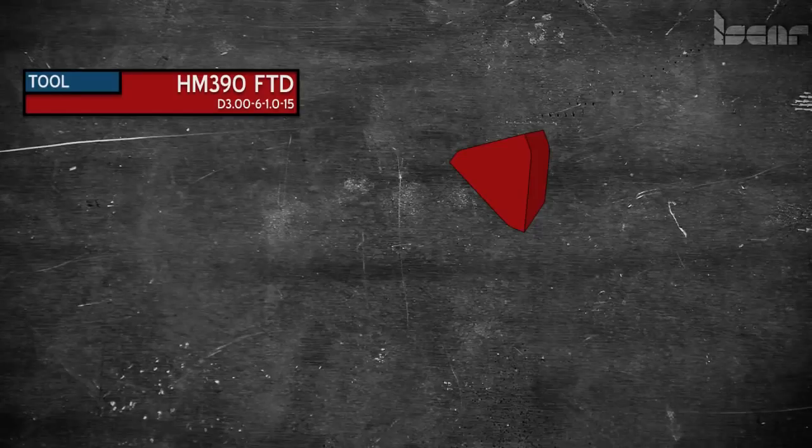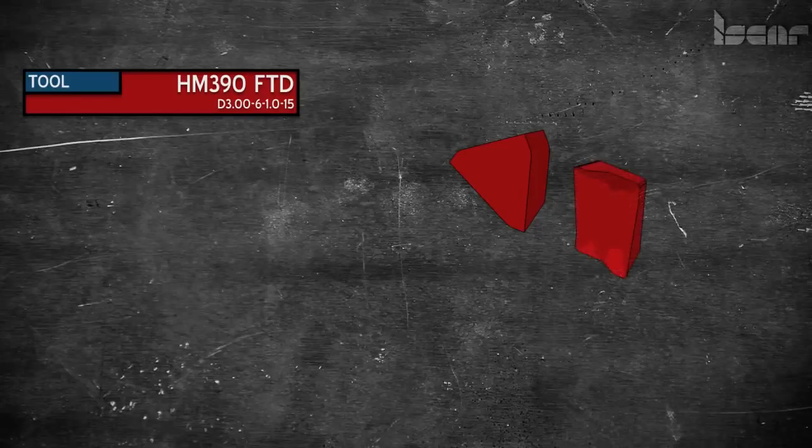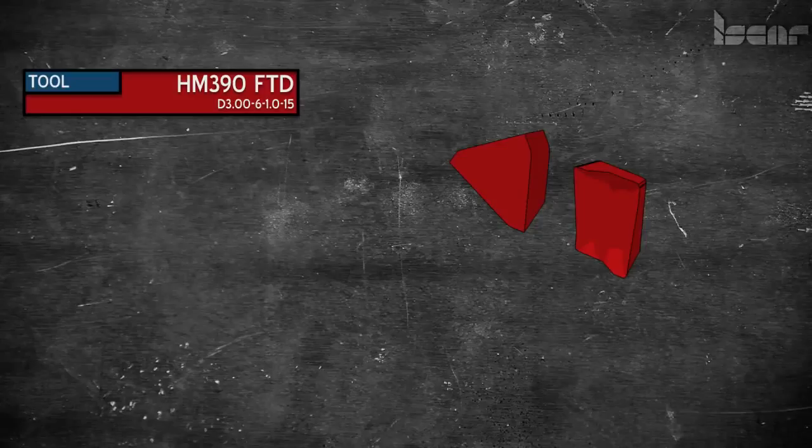Here is an HM390. It has three cutting edges versus two cutting edges on the Gila mill. We offer these inserts at almost the same price. So which one is the better deal?